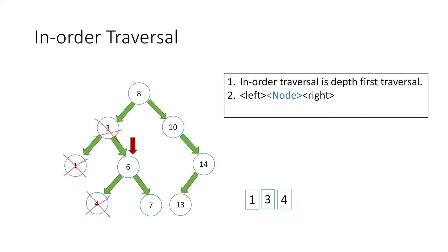At node 6, the rule says move left first, but we have already traversed its left side, so we print its value which is 6 and mark it as traversed. Next we move in the right direction to node 7. Since node 7 has no left child we print its value which is 7 and mark it as traversed. Node 7 has no right child, so we move up.